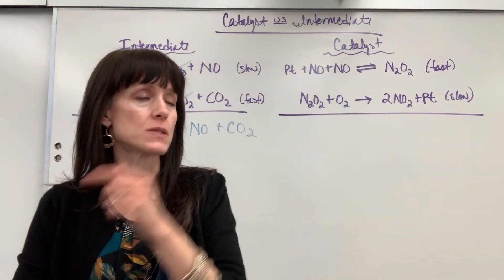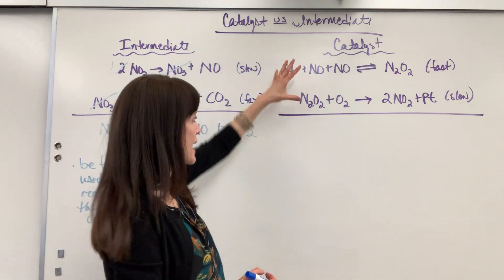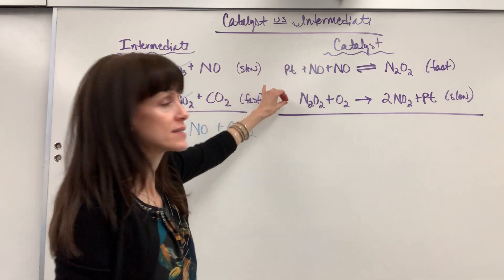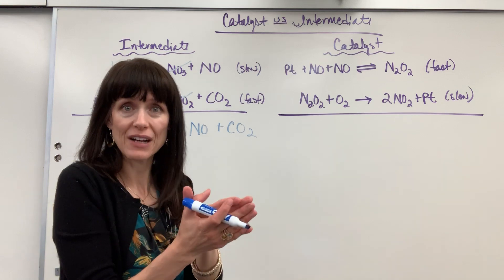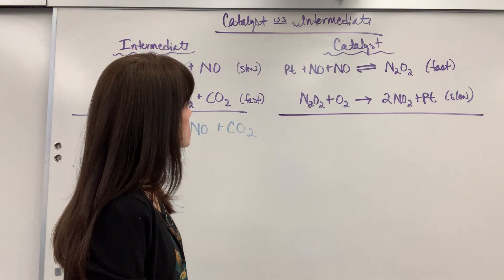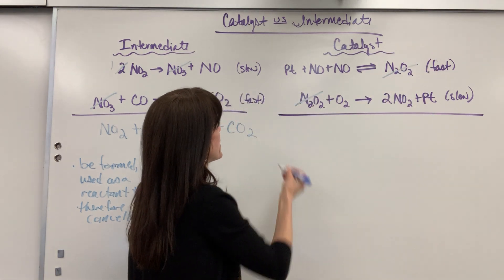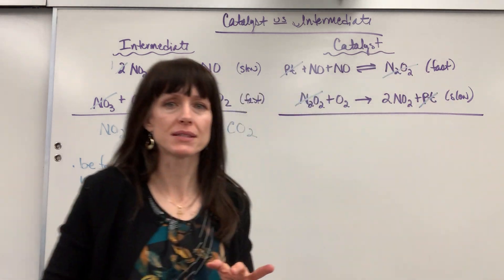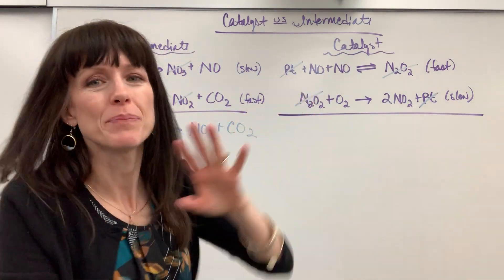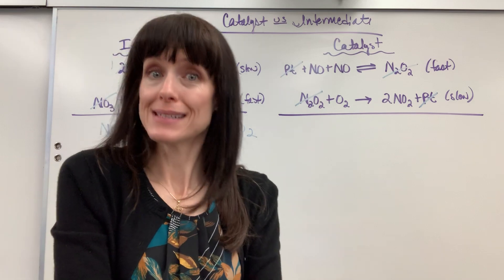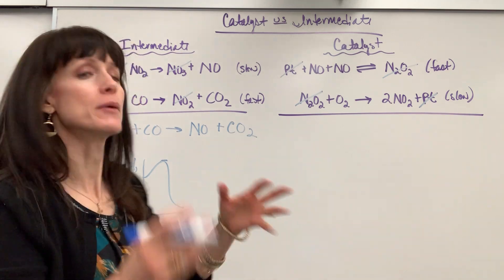Now, a catalyst. Same thing — we have our chemical intuition, our best guess at the reaction mechanism. When we add the elementary steps, it gives us the true chemical reaction. Let's see what cancels: I see N2O2 — that will cancel — and all the platinum — that will cancel. I made this example up as a teaching tool; this reaction doesn't actually need platinum, so don't try it. But pretend that it does.